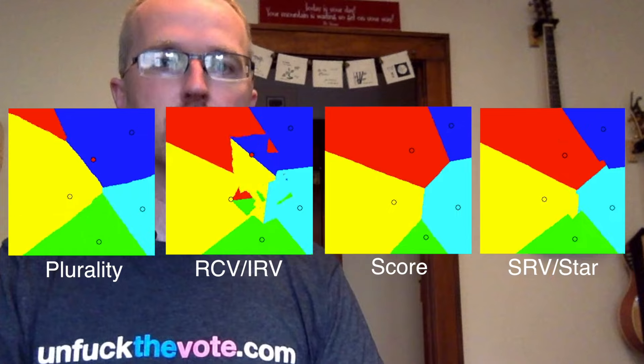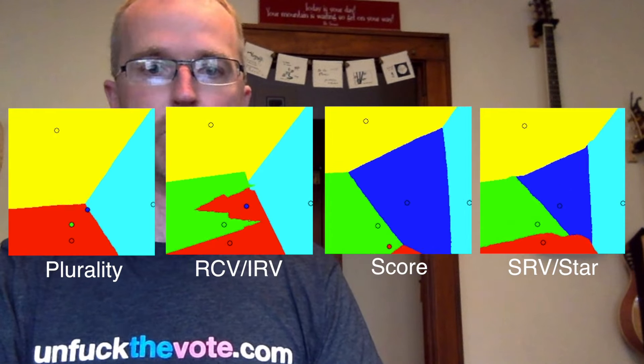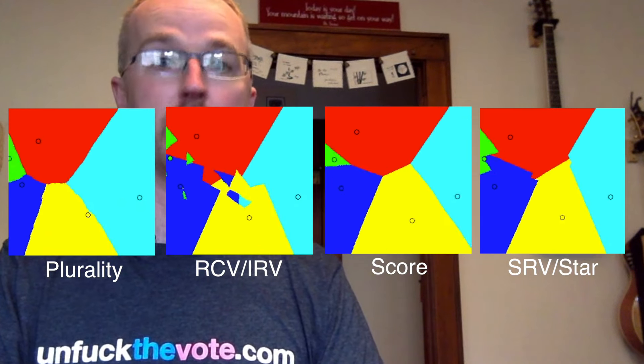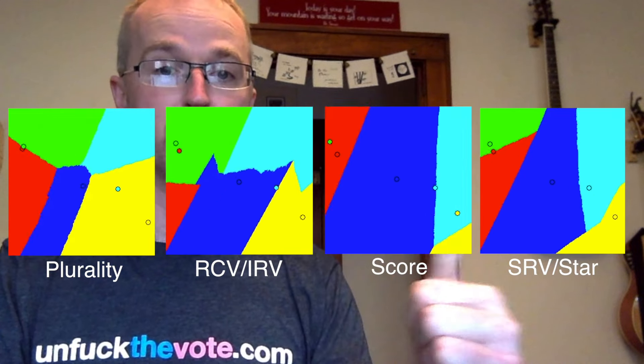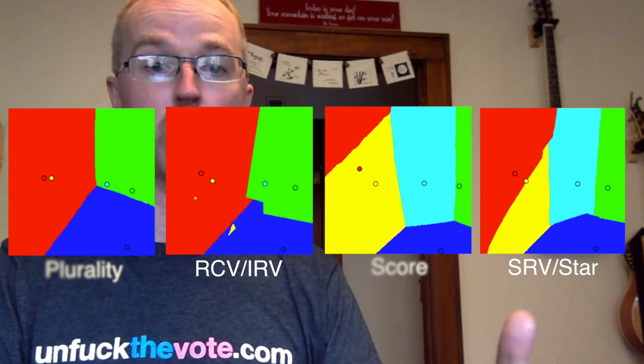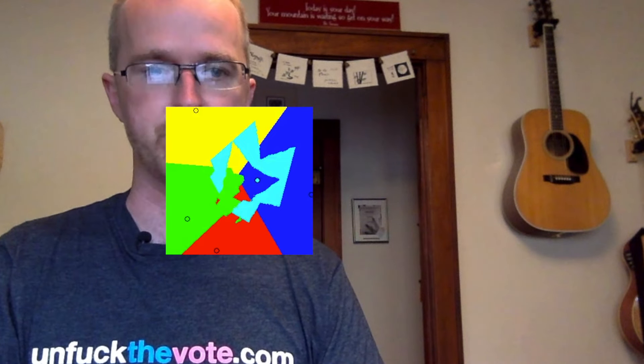Star voting corrects the distortion present in score voting and consistently comes closest to the ideal one-voter model. As we add more candidates, the problems with plurality, IRV, and score become more pronounced, to the point where IRV in particular produces these really strange results.